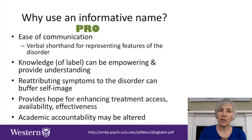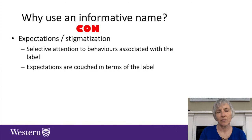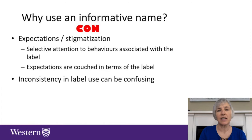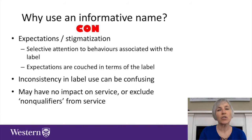Academic accountability can also be altered when a specific label has been given. What are some of the concerns regarding providing a label — some of the cons? One is around expectations and stigmatization. There is a concern that there could be selective attention to behaviors associated with the label while ignoring other strengths a child might have. There is also a concern about inconsistency in label use, which can be confusing. And there is a feeling that having a label has no impact on service, or may even exclude those who don't qualify for the label.